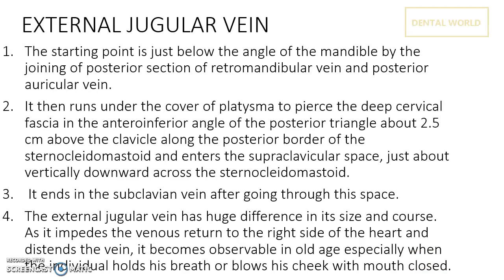What is the course of the EJV? It starts below the angle of the mandible by the joining of the posterior section of the retromandibular vein and the posterior auricular vein. So the retromandibular vein and the posterior auricular vein are the two main tributaries from which the EJV is formed.